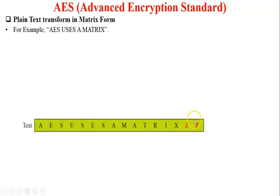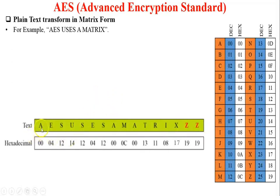Next, plaintext is transformed into matrix form. For example, AES uses a matrix — so this is my plaintext: 'AES uses a matrix.' Two Z's are filled in because I need to create a 4x4 matrix for 128-bit encryption. The phrase has 14 letters (14 bytes), and to complete 16 bytes (128 bits) I add 2 Z's to make 16 characters.